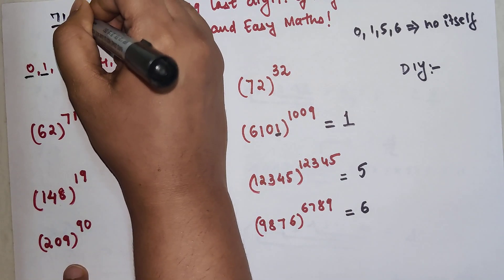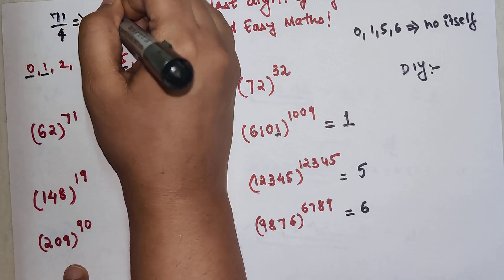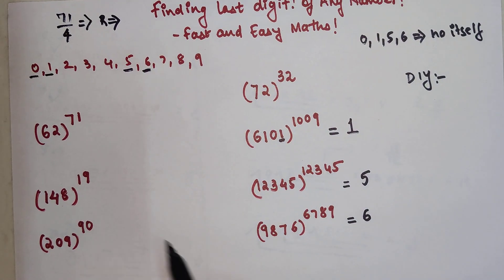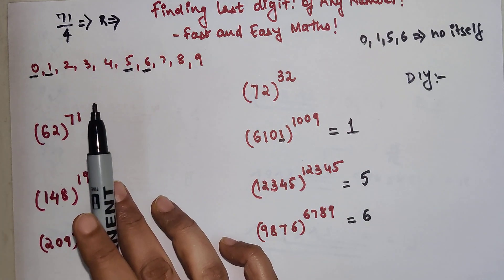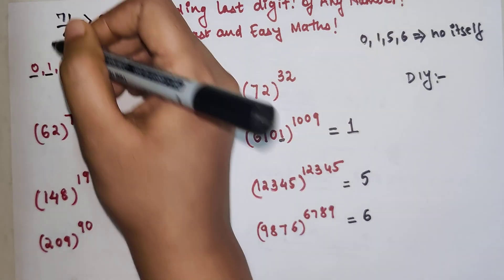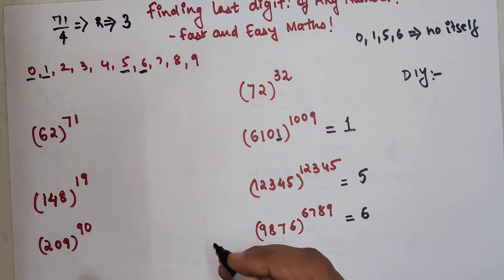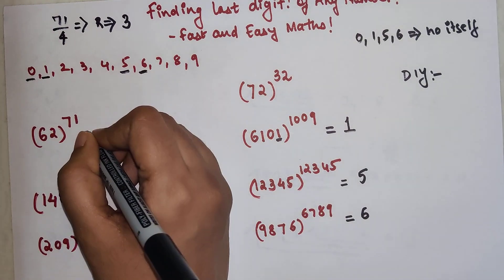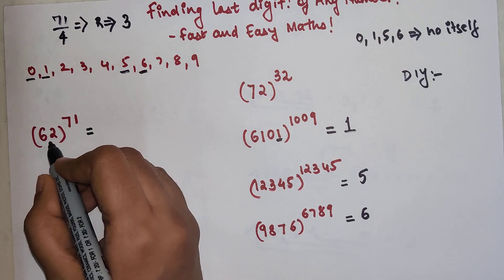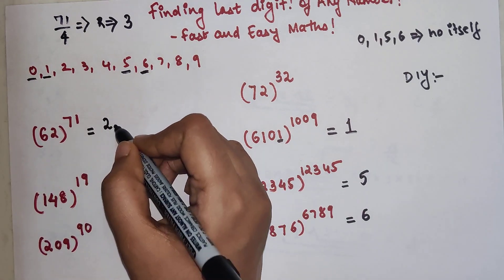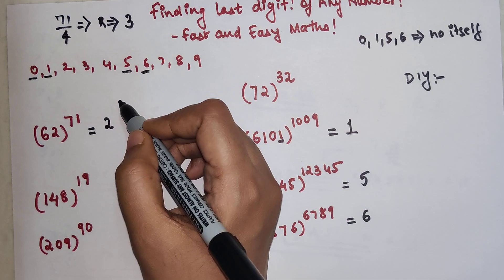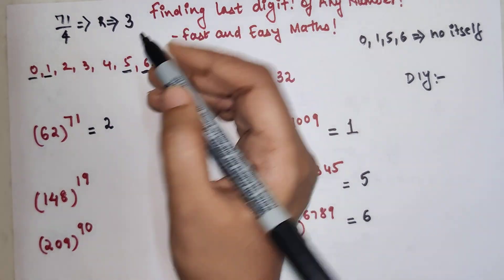The remainder here is 3, because 68 is completely divisible by 4. When you take 68 away from 71, you're left with 3. So your final answer is taking the last digit, which is 2, and raising it to the remainder we got. This is 2 cubed.